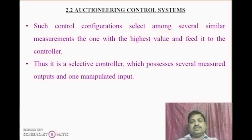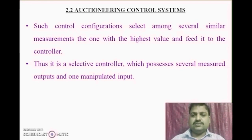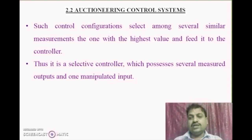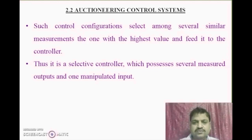Another type is the Auctioneering Control System. The Auctioneering Control System also has more than one output variable, and only one at a time has to be selected. In the previous Override Control System, we used switches for selection. But in the Auctioneering Control System, we use the auction method — that means, whatever value is highest, or whichever value is lowest, preference is given to that value.